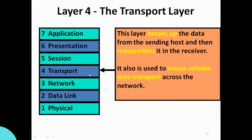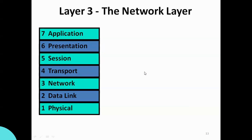Next is the Transport layer. This layer breaks data into small pieces — segments — and sends them to the destination system, where the pieces are reassembled back into the original data. The transport layer provides reliable data transport, ensuring data is delivered safely.